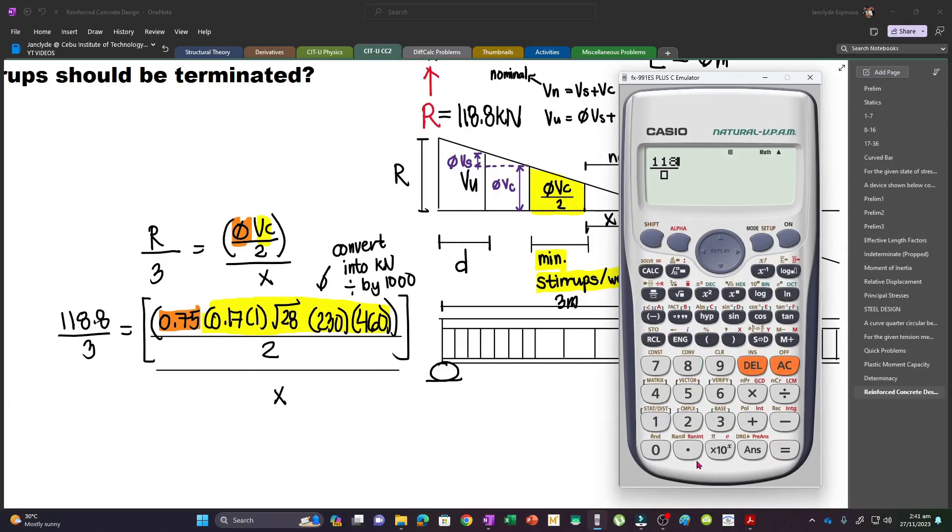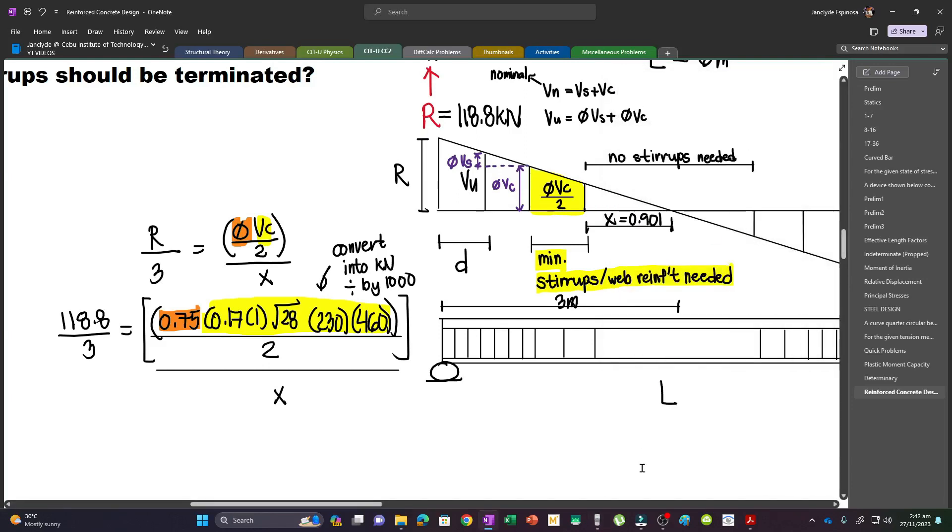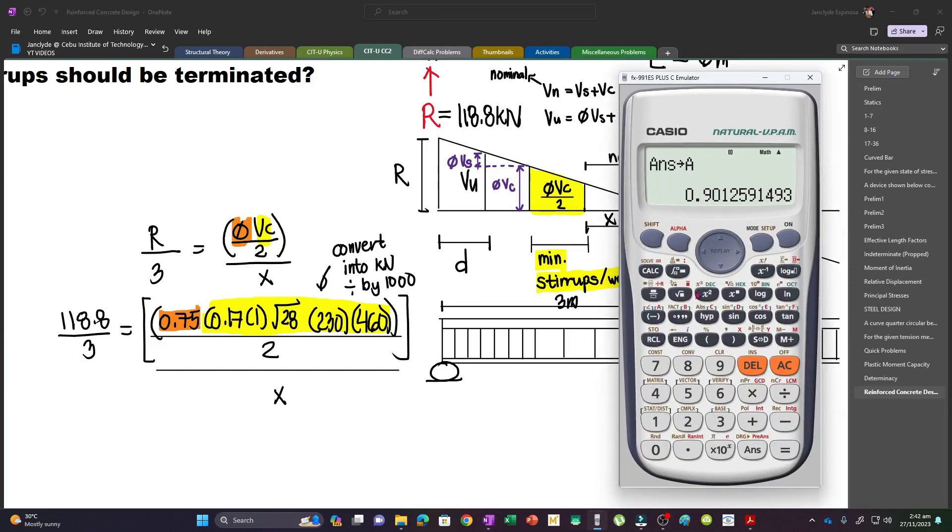It becomes 118.8 over 3 equals 0.75 times 0.17 square root of fc' times b times d, all over 2, over X. Press shift solve to get X. I didn't convert to kN earlier in the numerator, so divide by 1,000. We can get the value of X, which is 0.901. I'll store this in a variable so I can use the exact value, 0.9.